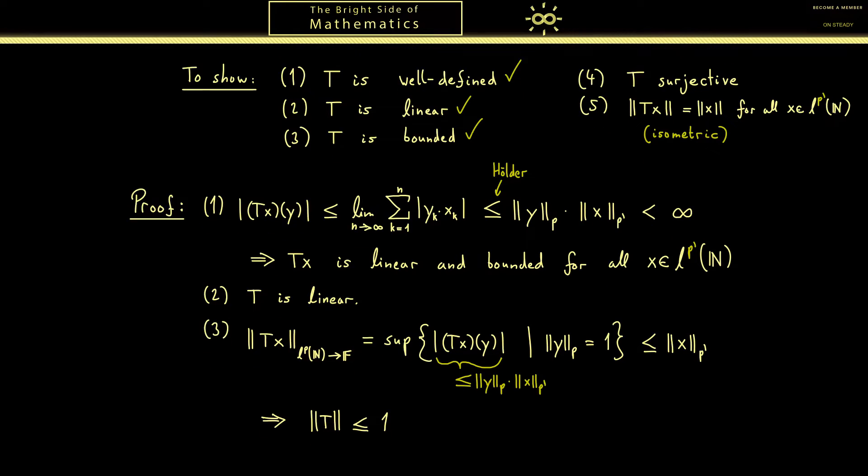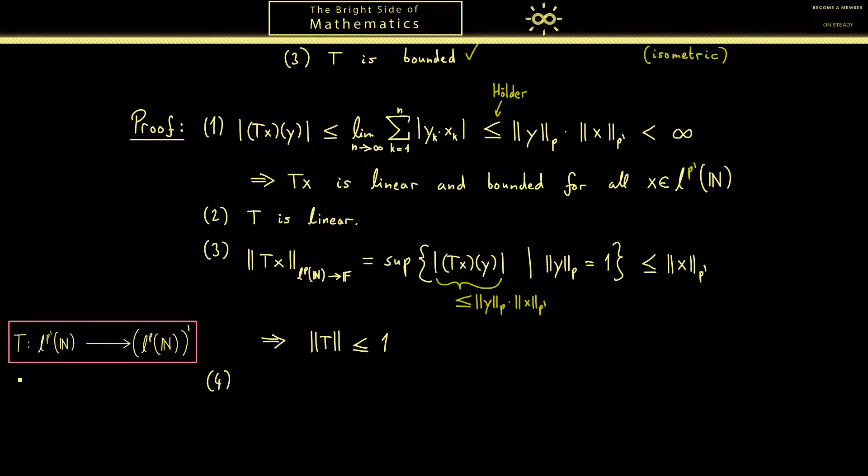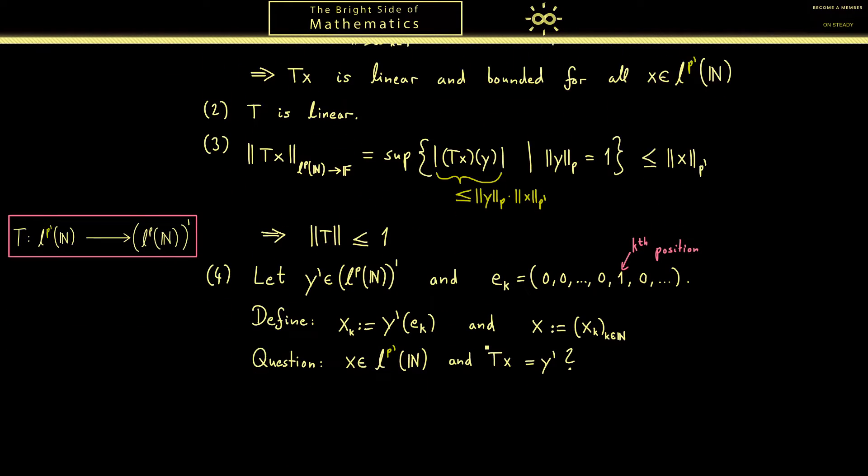Then let's go to the actual hard part showing that T is surjective. As a reminder I've put the operator T here in the box and now surjectivity means we hit all the linear functionals here on the right hand side. Therefore let's take an arbitrary one and call it y'. And now I want to use the linearity and conclude that I know what y' is when I know what it does with the unit vectors ek. Now the vector ek is given by the sequence that only has zeros everywhere with the exception at the kth position there is a 1. Now by applying y' to all the ek's we get a whole sequence of outcomes. And let's call the members just xk. Hence we get a whole sequence which we call x. We do this because we think this is a good candidate to be the pre-image of y' under T. Therefore this is the question we have to answer is x really in Lp' and does it map to y'.